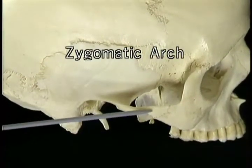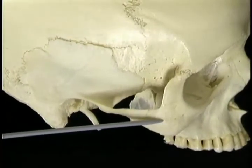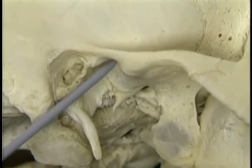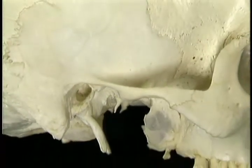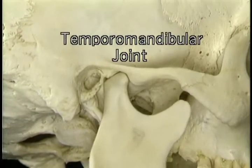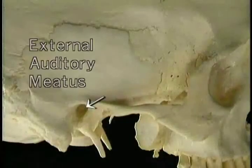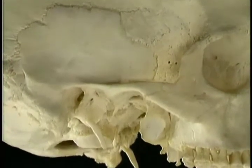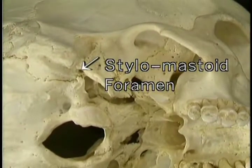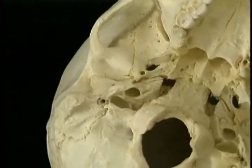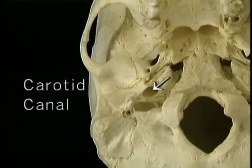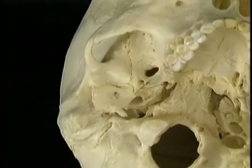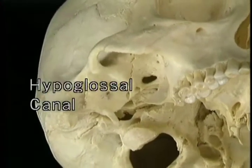This is the zygomatic arch, formed largely by the temporal bone and partly by the adjoining zygomatic bone. Here on the underside of the root of the zygomatic arch, this complex curved surface articulates with the condyle of the mandible to form the temporomandibular joint. This is the external auditory meatus leading to the middle ear. This long sharp projection is the styloid process. Just at the base of the styloid is the little stylomastoid foramen for the facial nerve. Medial to the styloid process are two major openings for blood vessels: the carotid canal passing forwards for the internal carotid artery, and the jugular foramen passing backwards for the internal jugular vein. Just above the occipital condyle is the hypoglossal canal for the hypoglossal nerve.